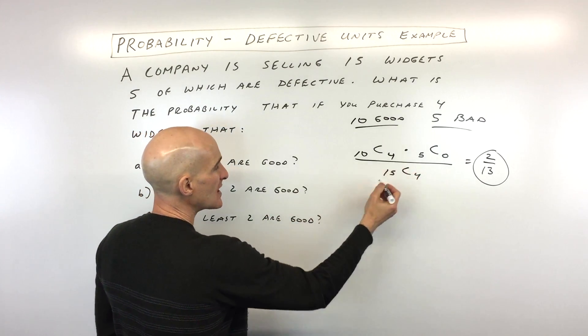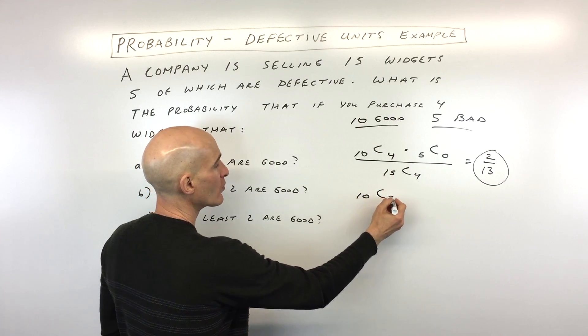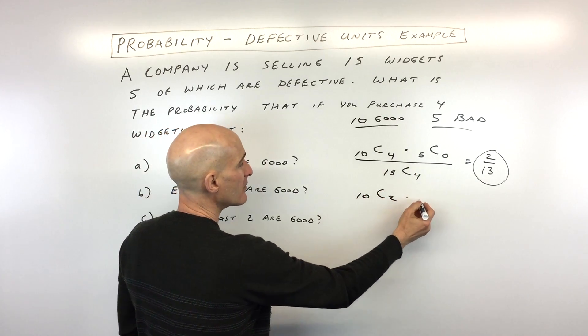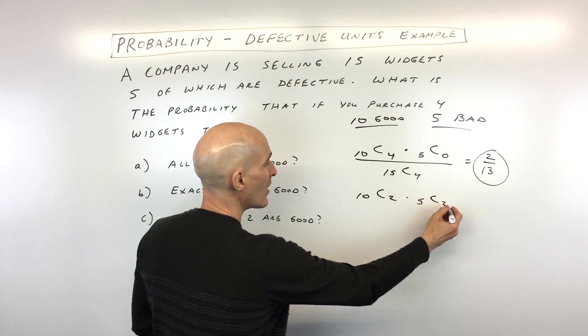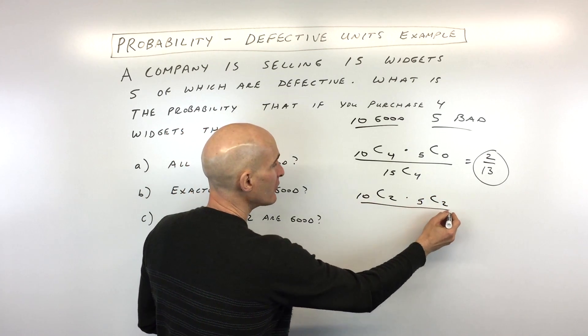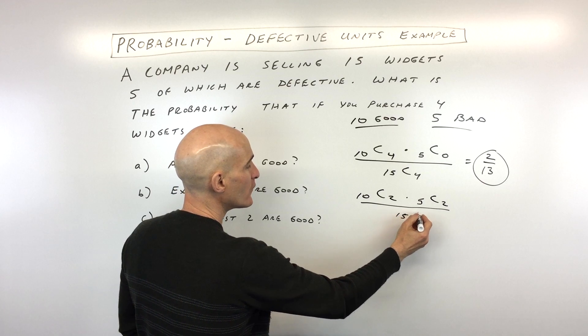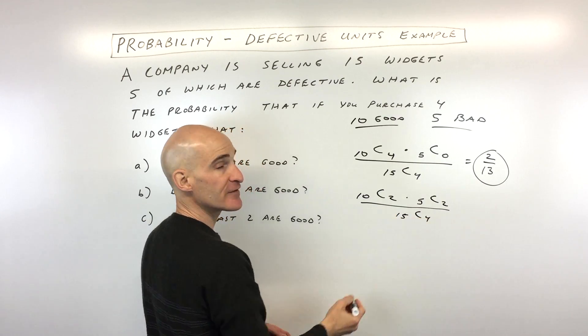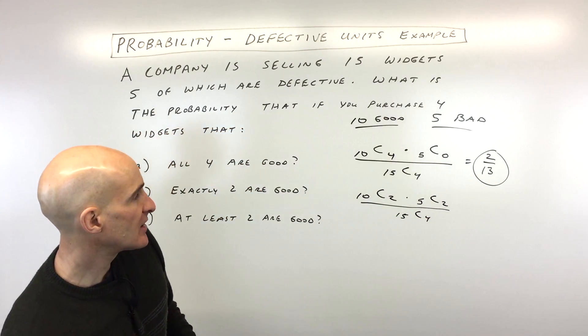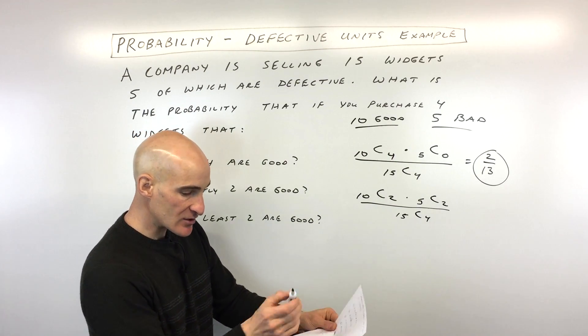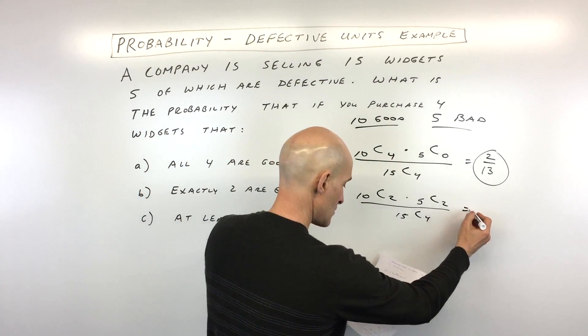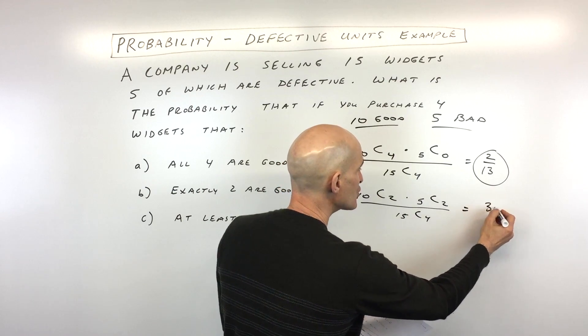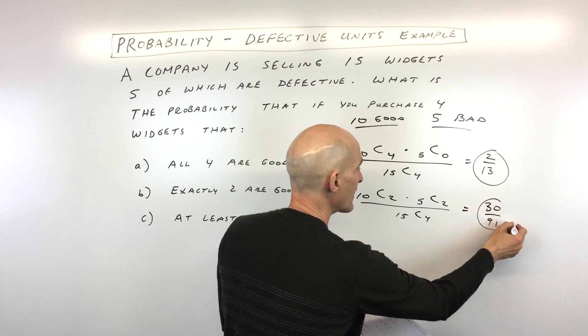So what we're going to do is we're going to do the same type of setup, we're going to say out of the 10 good ones, we want to choose two, and out of the five bad ones, we want to choose two, and it's all divided by the total ways of choosing four widgets out of the 15. Okay, and again, I calculated this here for us before this video, and this comes out to 30 over 91. So you can check your answer with that part B.